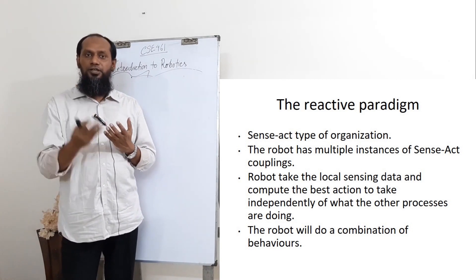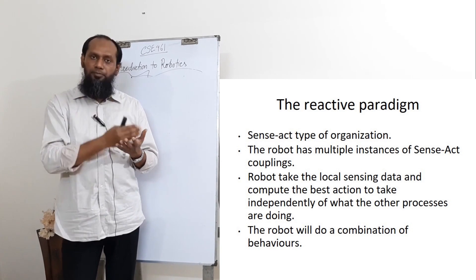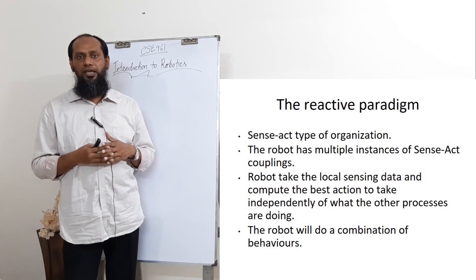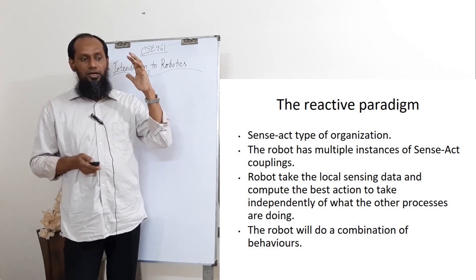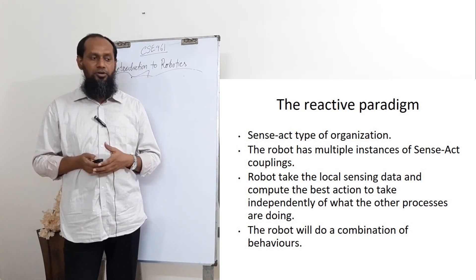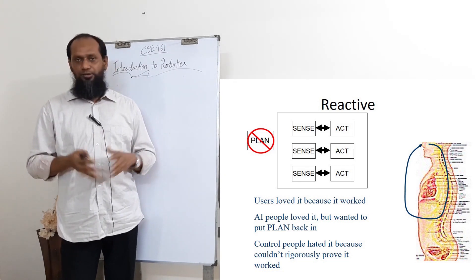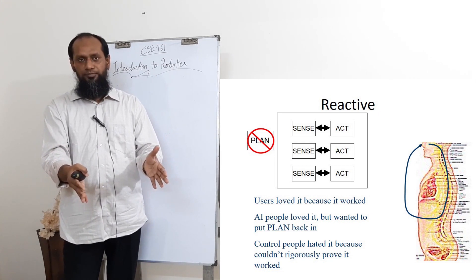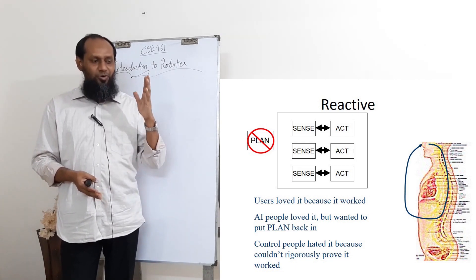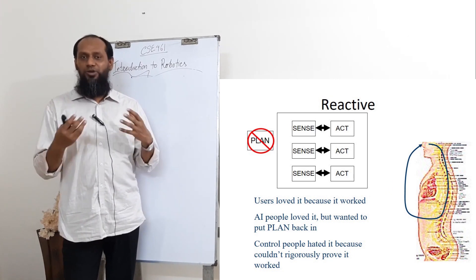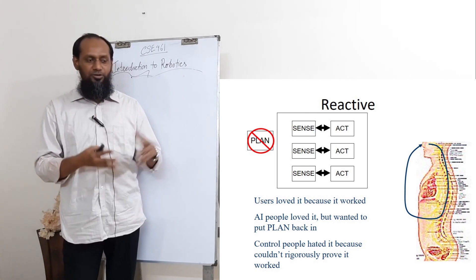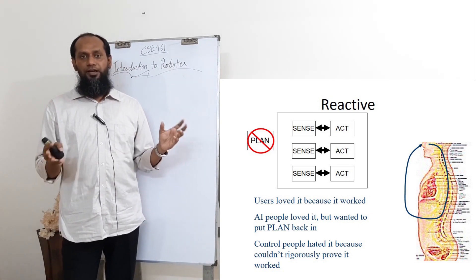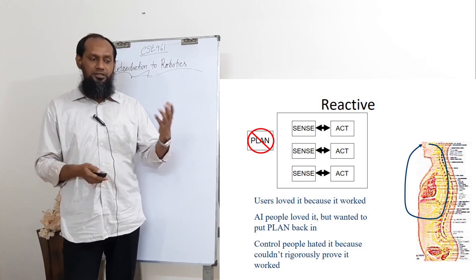The reactive paradigm is very reactive and works very nicely, but there is no global planning — it has local rule-based decision-making for actions. Users love it because it works — sensing something, taking a decision, going out from a line and coming back. AI people love it too, but want to put planning back into it — they want to add AI elements. Control people hate it because they cannot rigorously prove it works; without a plan, they believe a system cannot work properly.